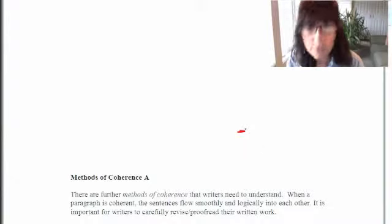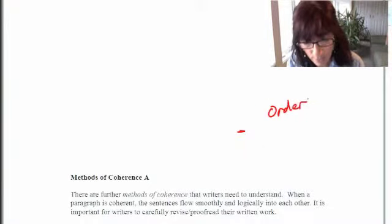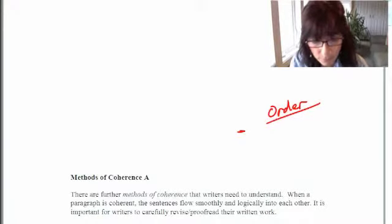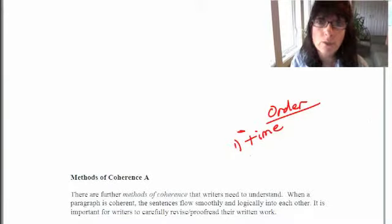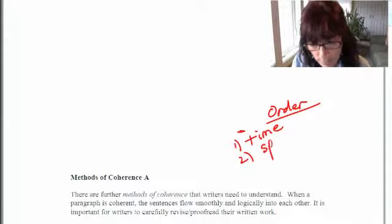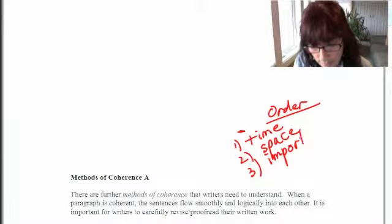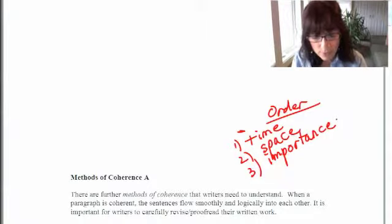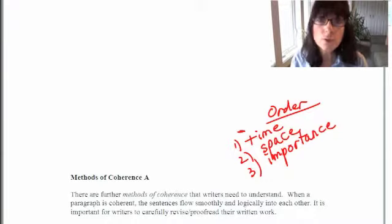Hello. I wanted to discuss other methods of coherence when you're writing. My last series of videos on coherence did discuss other methods — using some sort of order when writing paragraphs. I discussed three types: time order or chronological order, space order, and order of importance. Those are important videos to review in order to include some sort of logical order in your writing and keep your reader focused.